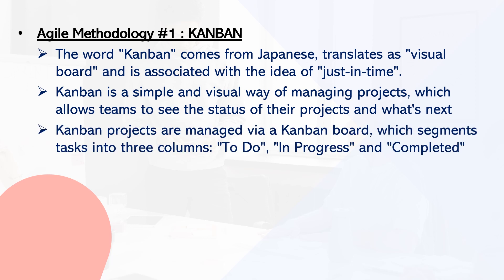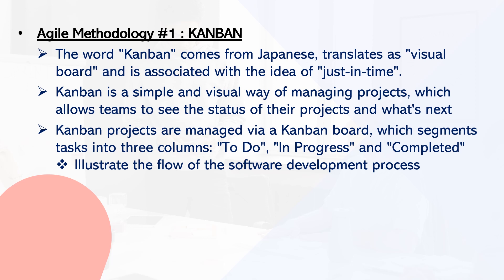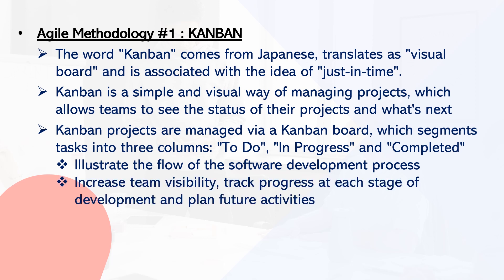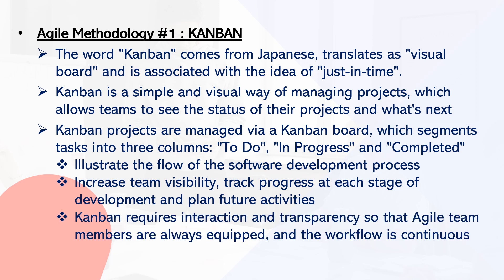Kanban projects are primarily managed through a Kanban board, which segments tasks into three columns: the to-do column, the in-progress column, and the closed or finished column. This board illustrates the process flow of software development, increases agile team visibility, and helps plan forthcoming activities to deliver the product just in time. Kanban necessitates extensive interaction and transparency to maintain a continuous flow of work.